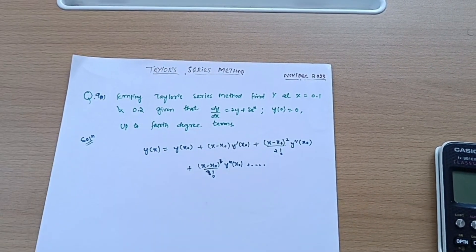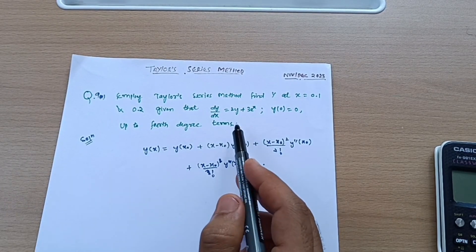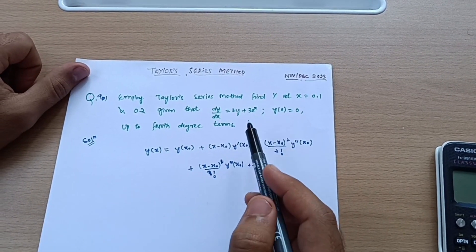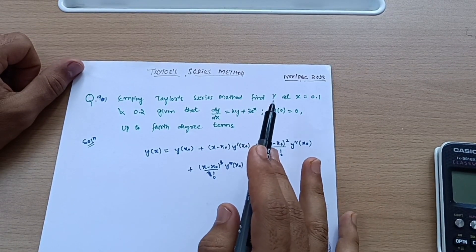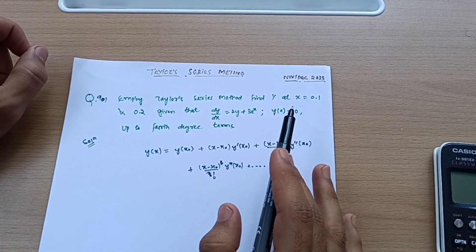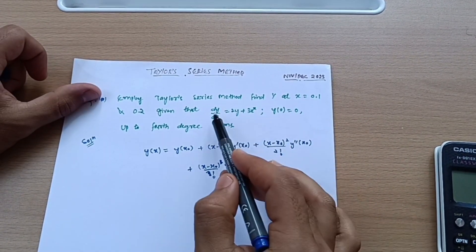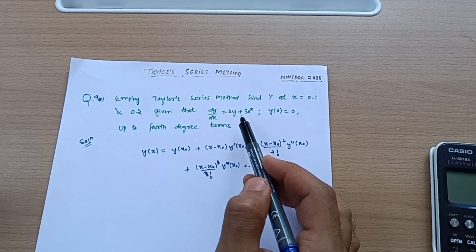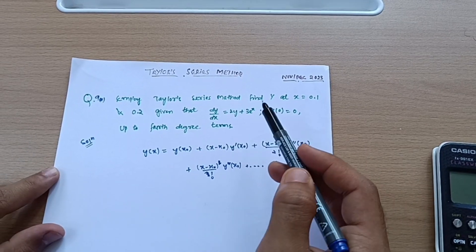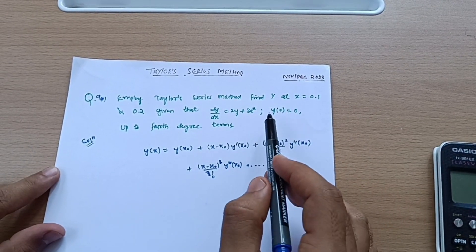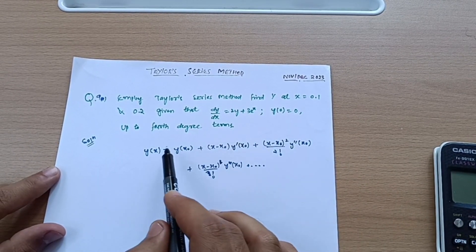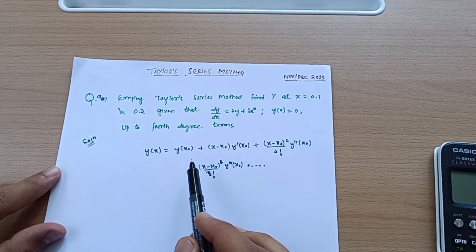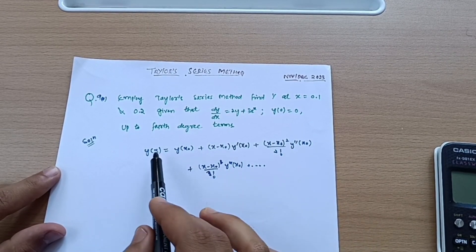Let me discuss point-wise what this fourth degree term means and what dy/dx = 2y + 3eˣ means. In the Taylor series method we are solving the ordinary differential equation of the first order. This is the differential equation of the first order — we would find out the approximate solutions for this particular derivative. You will have the formula in the handbook in the examination, no need to remember.